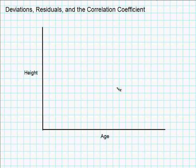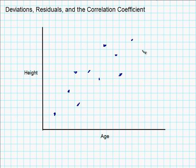Let's say we did a survey at an elementary school and measured the height of the kids and looked at their ages. If you graph this, you'd expect that the younger kids would tend to be shorter and the older kids would tend to be taller, but you're going to get data that's really all over the place — some short people that are older and some tall kids that are younger. So the question is, is this a linear relationship?